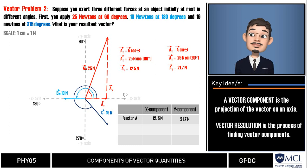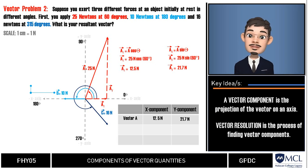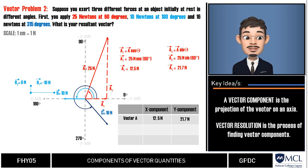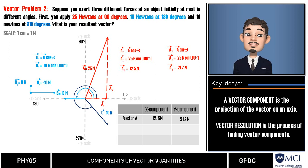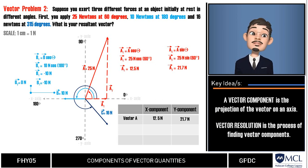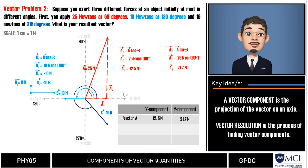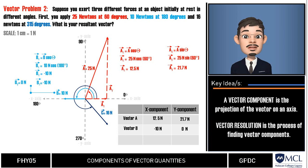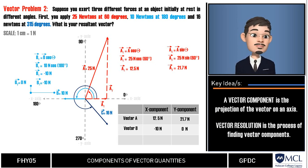For vector B, notice that it lies exactly on the negative x-axis. Therefore, the y-component is zero and the x-component equals the magnitude, 10 newtons. Even using the formula you get the same result. Importantly, since it lies on the negative x-axis, we use a negative sign. In our table, vector B has an x-component of −10 newtons and a y-component of 0.